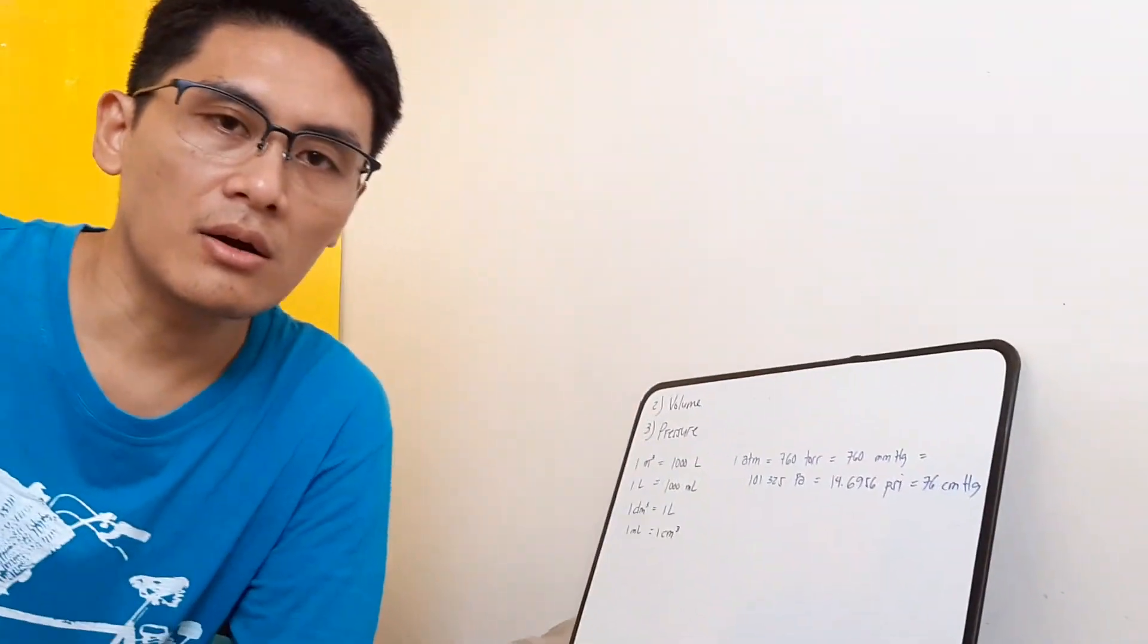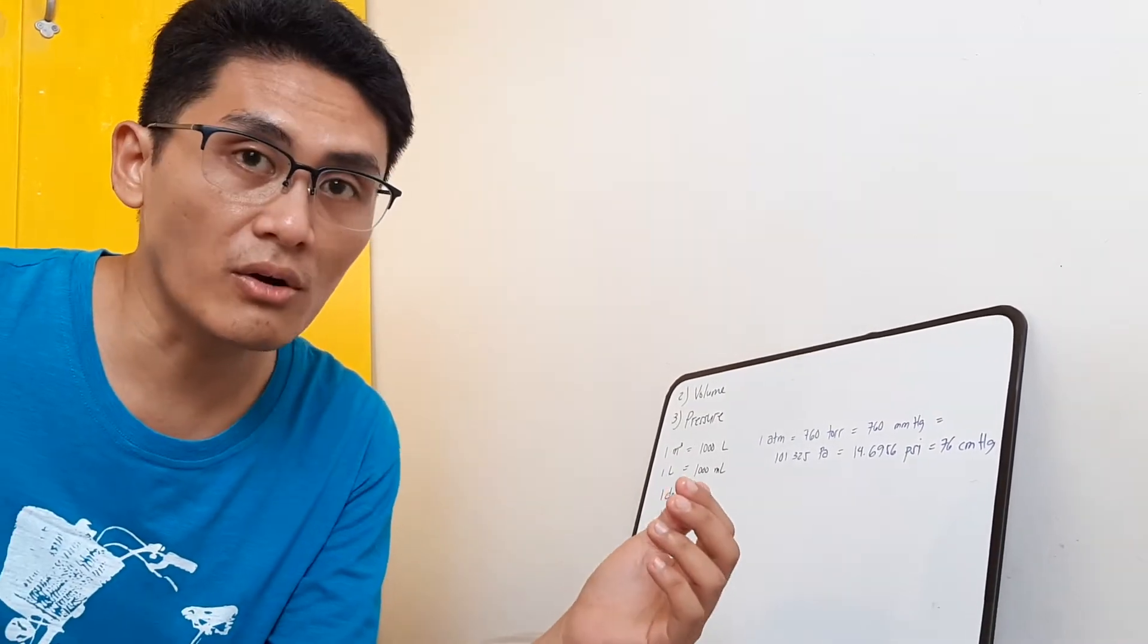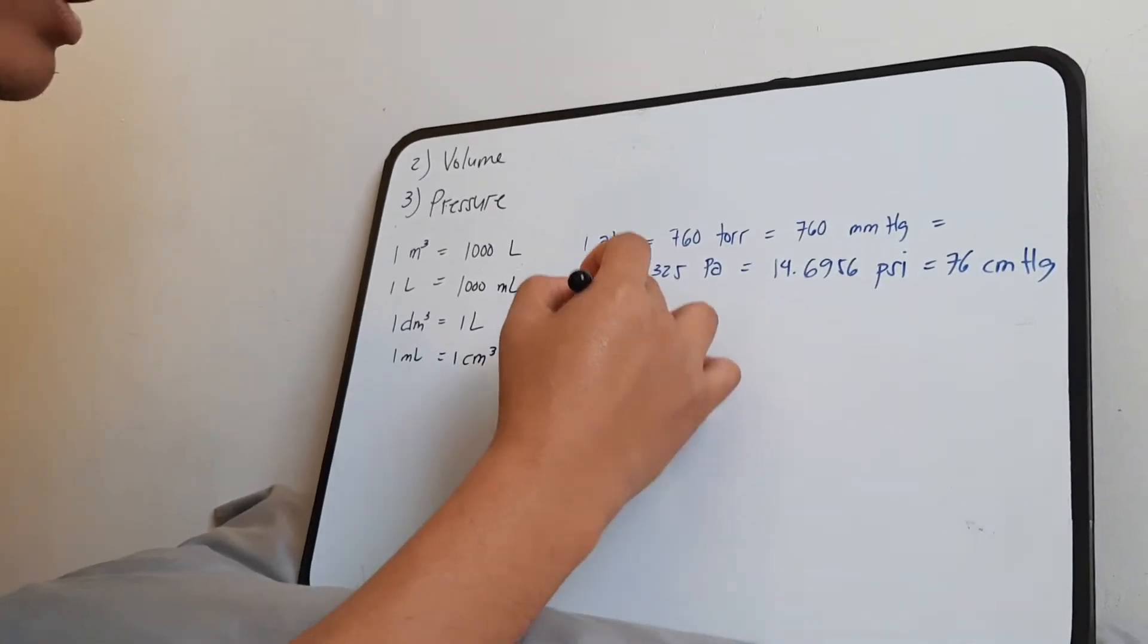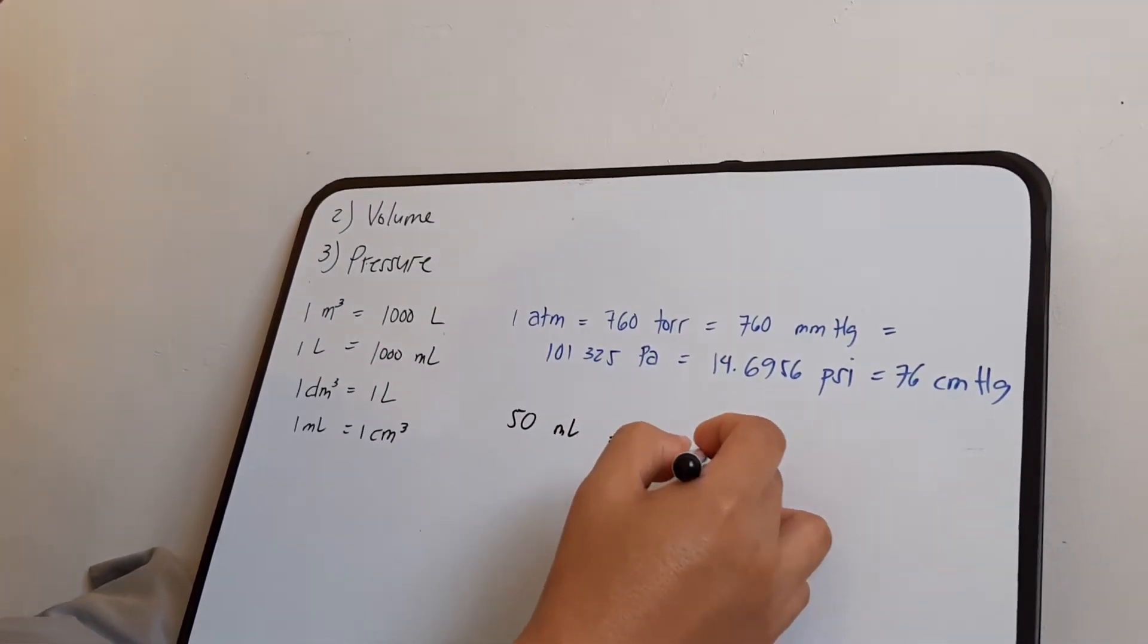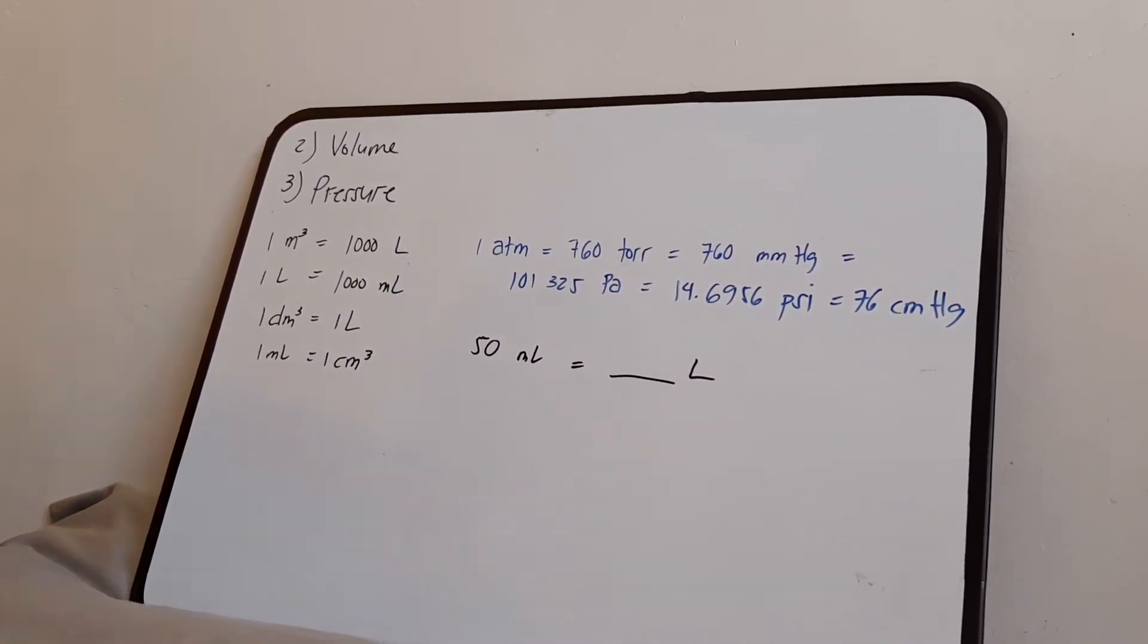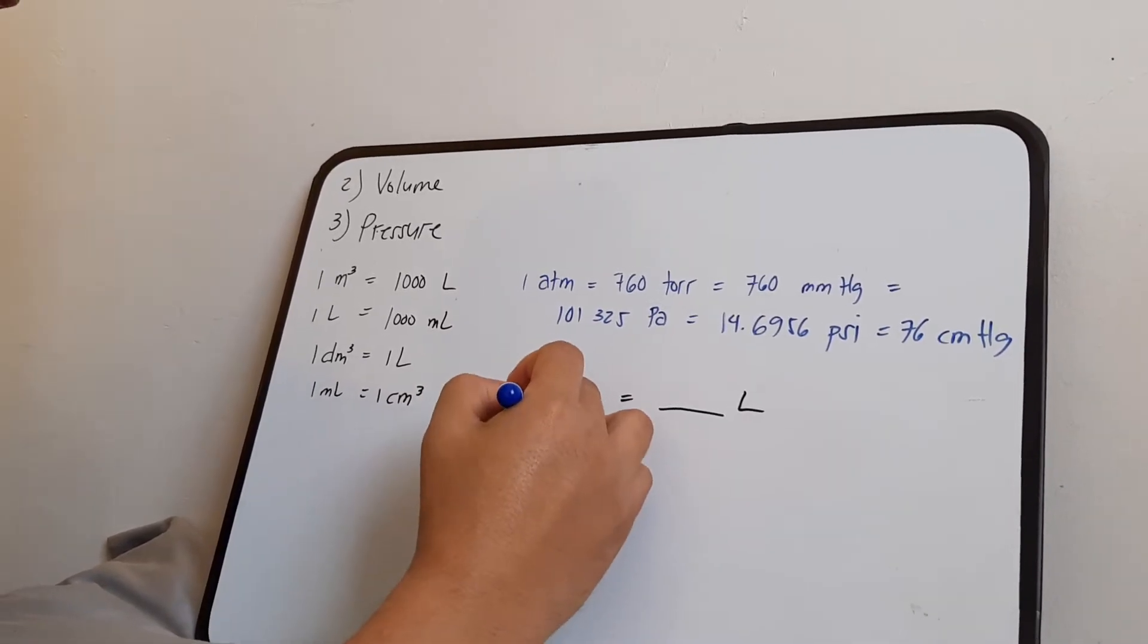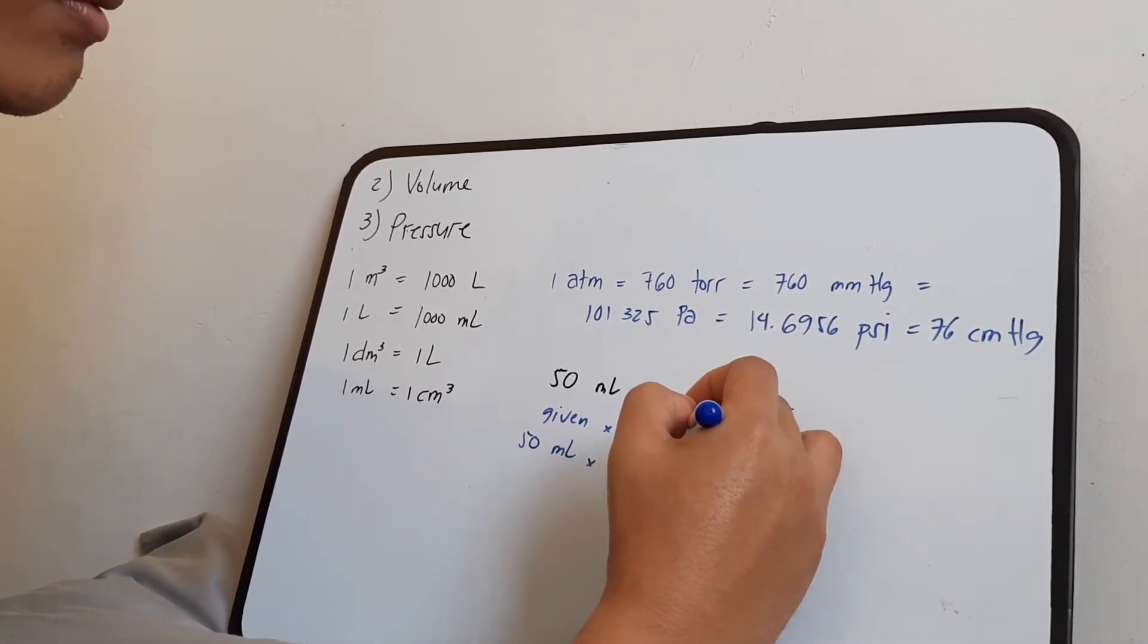So basically you will encounter different units in different problems, and so you have to know how to convert them. So let's review how we convert something. If we have an original number, like for example 50 ml, and you want to convert that to something like a liter, you always remember that the method for doing this conversion is you start with what is your given, which is the 50 ml. So you have your given, and then you multiply that given with a conversion equivalent.